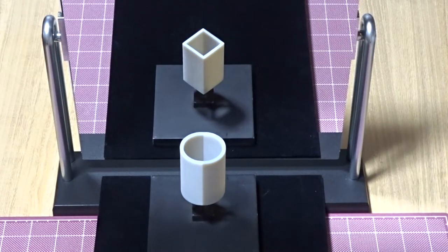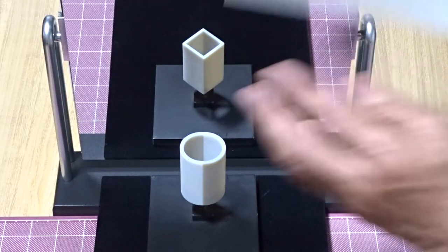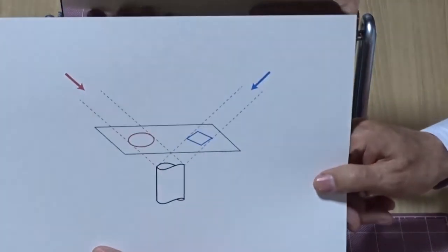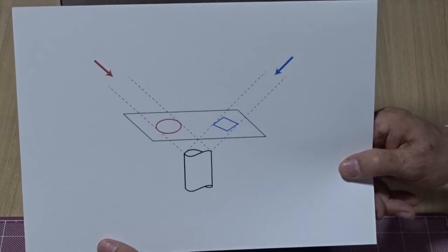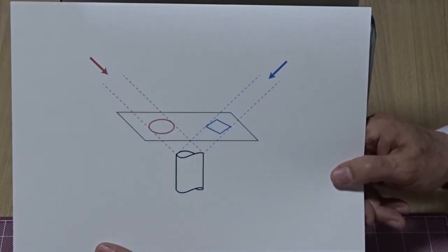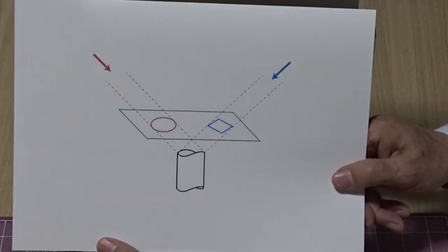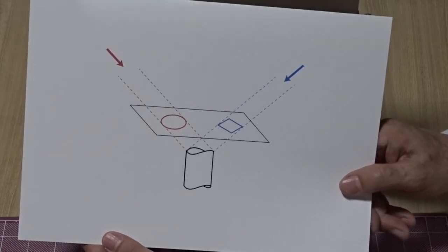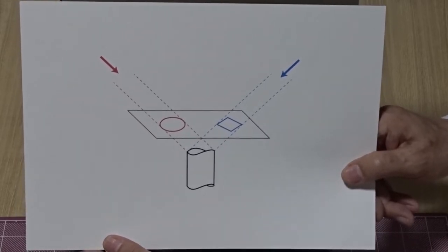Next we want to consider how to construct this object. Our goal is to find a space curve which looks like circular from one direction, and which looks like rectangular from another direction.